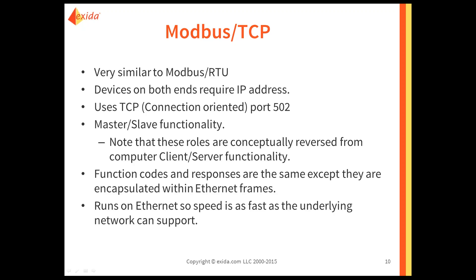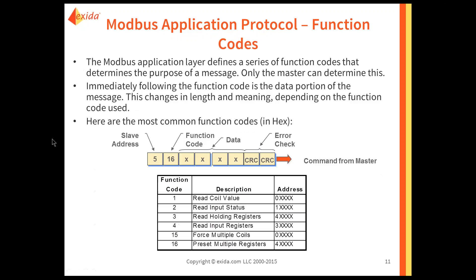The function codes and responses on the Ethernet network are exactly the same as they were on the serial network — RS-232 and RS-485. The difference is they've now been encapsulated within the Ethernet frames. And it runs as fast as your underlying Ethernet network can run, whether you're at 10 meg, 100 meg, 1 gig, or 10 gig.